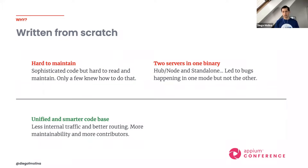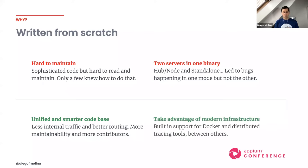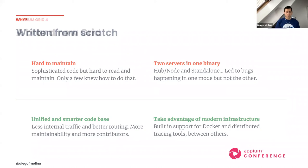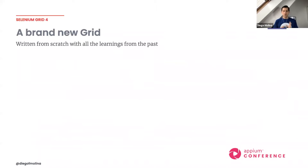With a unified code base, it's much smarter — more people understand the code, more people have contributed and can contribute in the future. We also have less internal traffic, which was one of Grid 3's pain points. Under high load, internal health checks were creating pressure. Grid 4 handles internal traffic differently. We also have more contributors, and we're taking advantage of modern infrastructure such as Docker containers built in, distributed tracing tools for observability, and support for cloud storage backends.